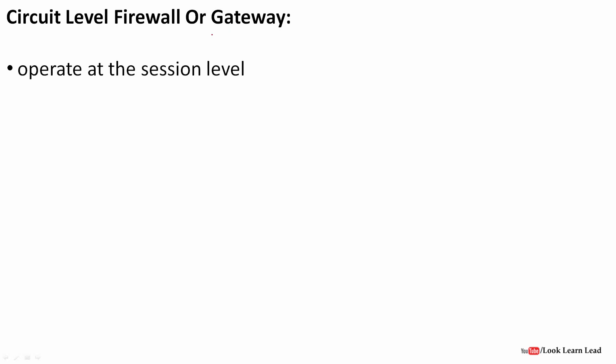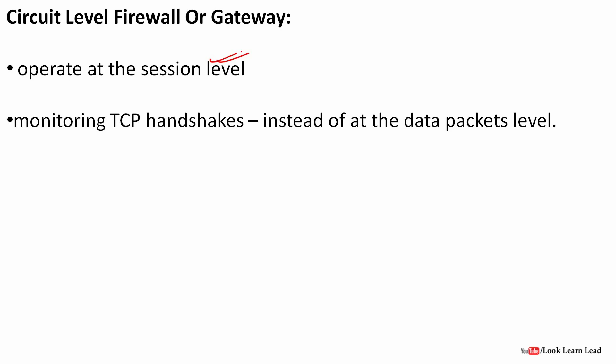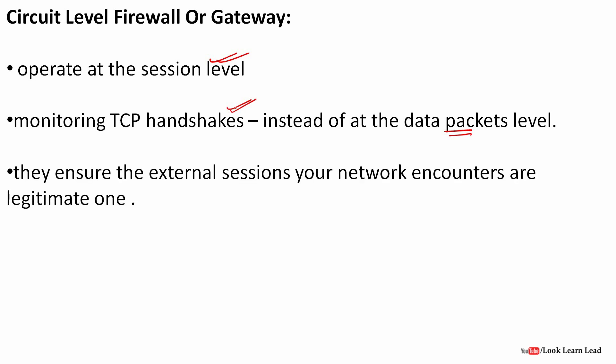The second type is the circuit level gateway, which operates at the session layer. Instead of filtering at the packet level, it works at the session level. It monitors TCP handshakes to ensure that external sessions on your network are legitimate. Only legitimate sessions are allowed through; sessions that are not legal are blocked. This is a TCP handshake-based firewall.